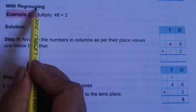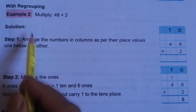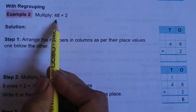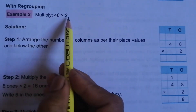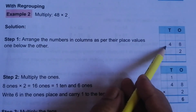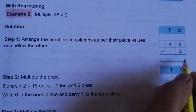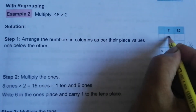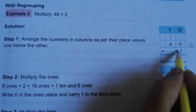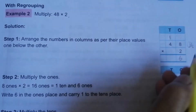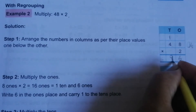Next is multiplication with regrouping — that means with carryover. Example 2: Multiply 48 × 2. Write the numbers vertically. 8 twos are 16 — write 6 and carry over 1. 4 twos are 8, plus 1 carryover equals 9. So the answer is 96.